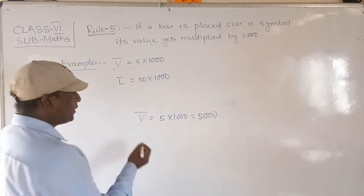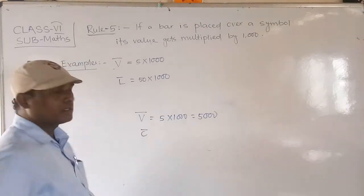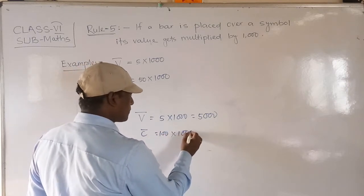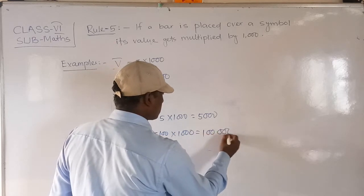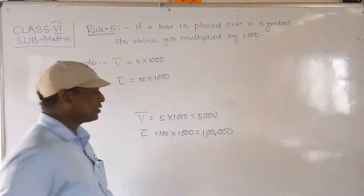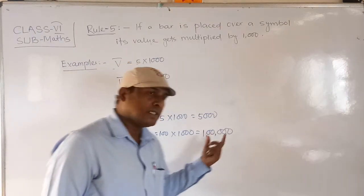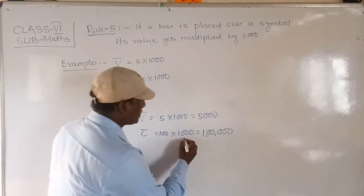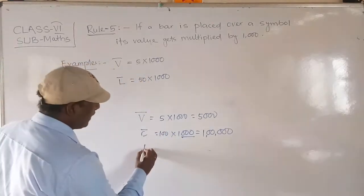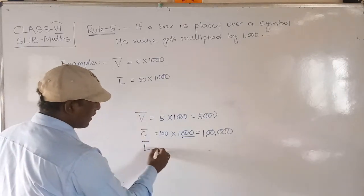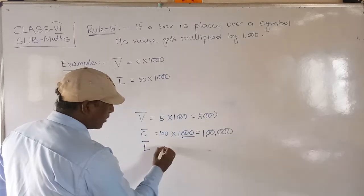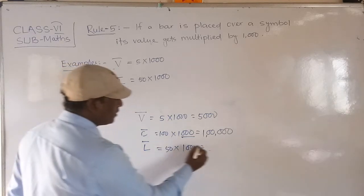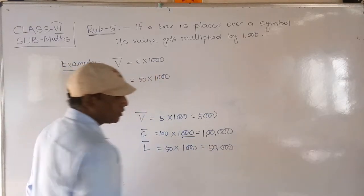Similarly, L with a bar — L-bar. L means 50, multiplied by 1000, equals 50,000. So L-bar represents 50,000. Did you understand, friends?